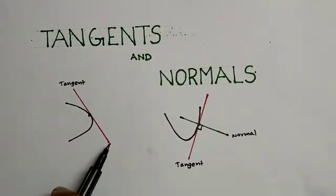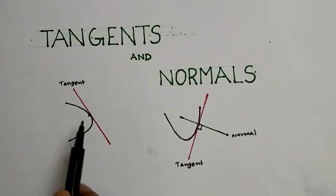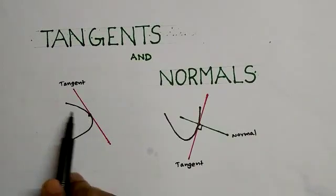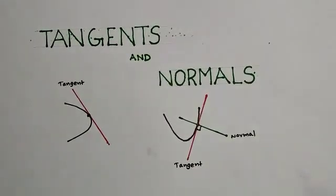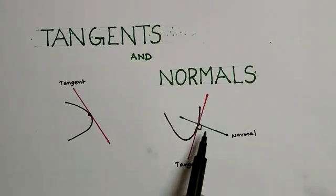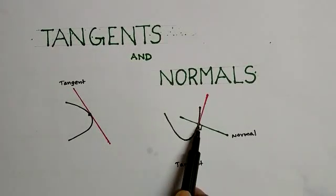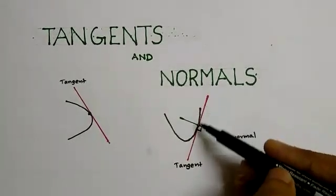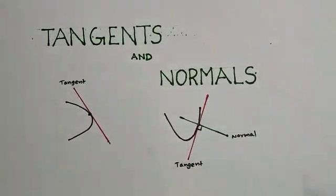A tangent is a straight line which passes through a fixed point of any curve. A normal is a line which passes through a fixed point and is perpendicular to the tangent.